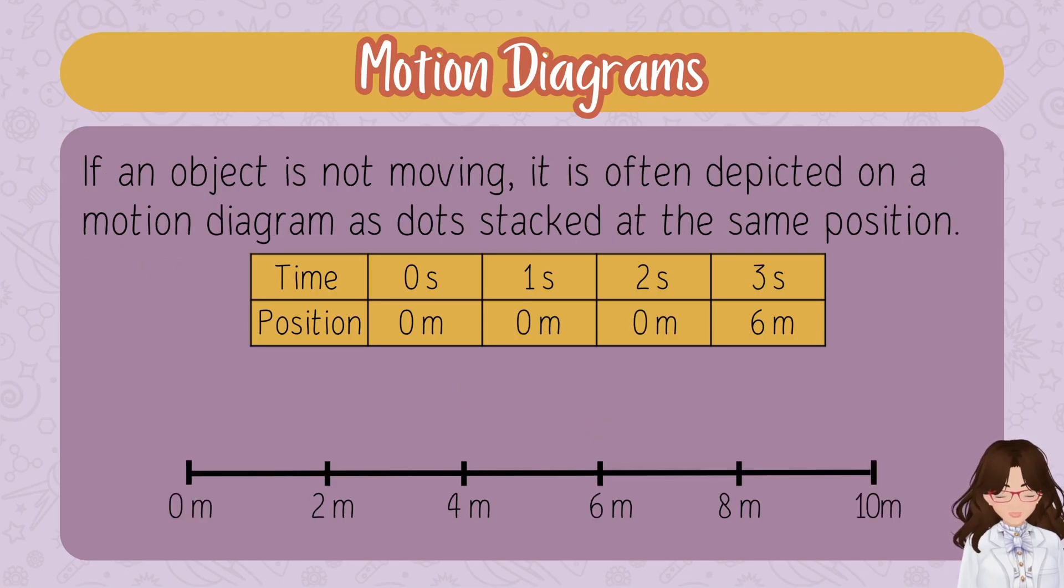Now what if the object is not moving? If it's not moving, it stays at the same position. What do you do if the spot for the dot is already taken? You stack them.